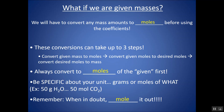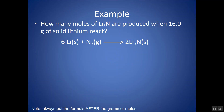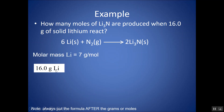Let's look at an example: How many moles of Li₃N are produced when 16 grams of solid lithium react? We start with 16 grams of lithium and want to turn it into Li₃N. Notice this chemical reaction relates Li to Li₃N in a 6 to 2 ratio, but we can only use those coefficients if we're in moles.